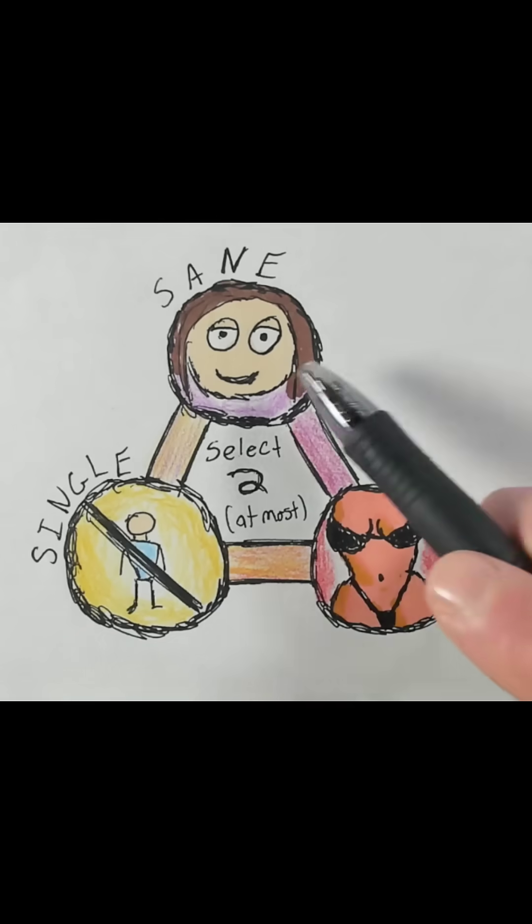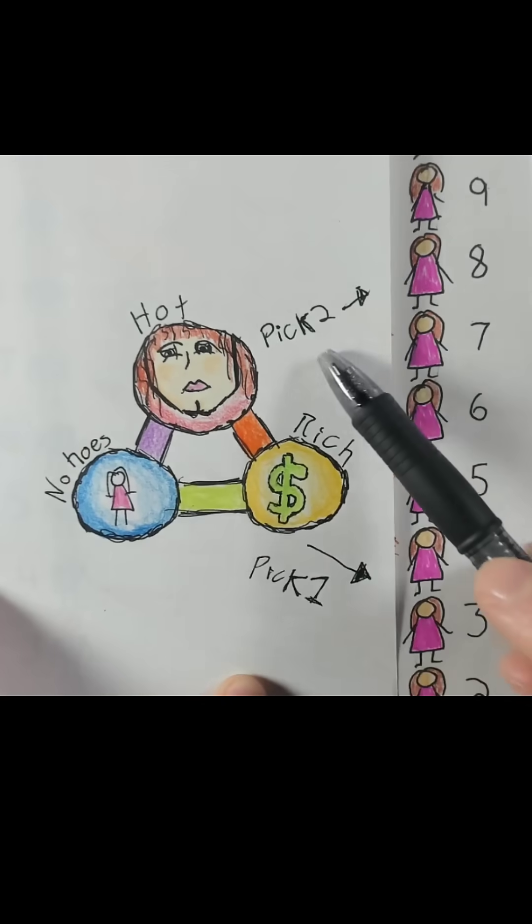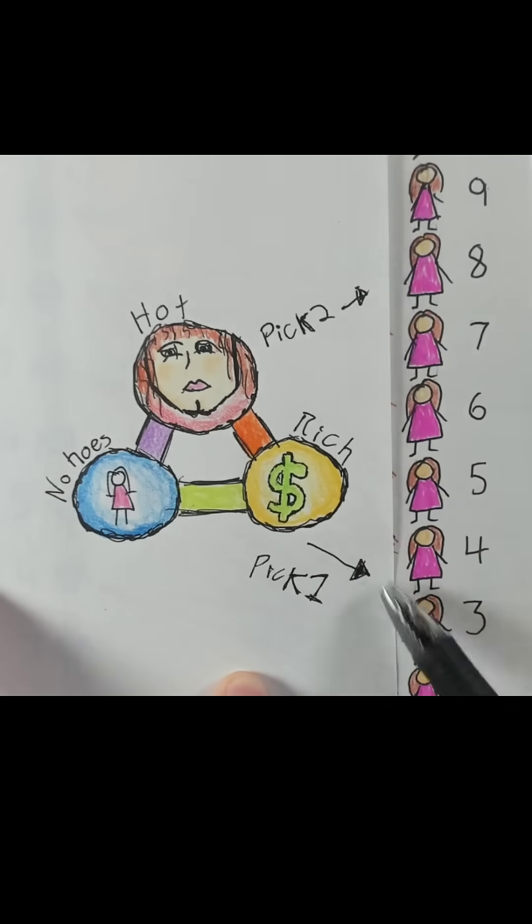So there you go: sane, single, hot, pick two. I'm gonna add 'at most.' I don't want to leave the girls out. Here's one for men: hot, rich, and no hoes. Pick two if you're above a seven, otherwise pick one.